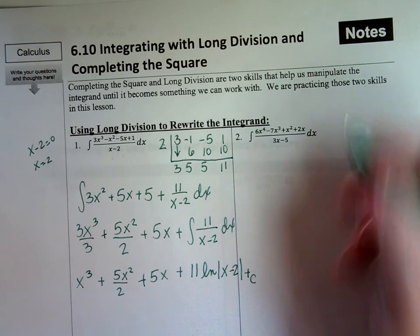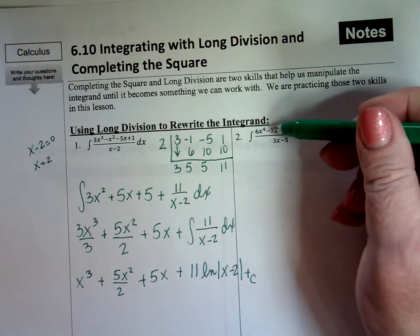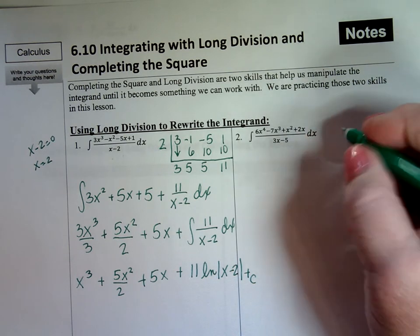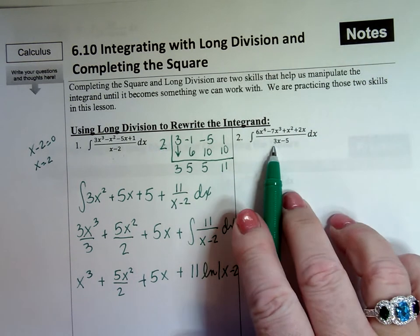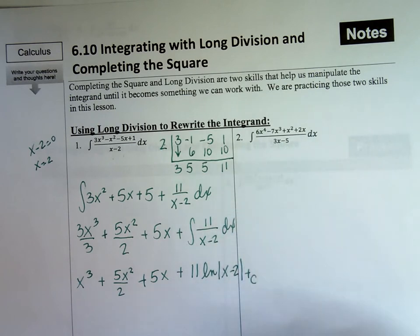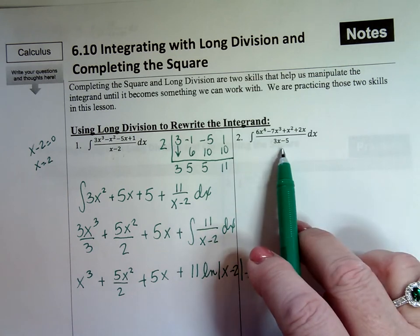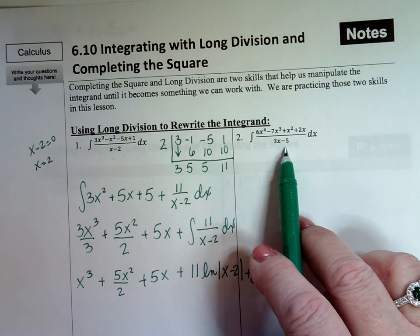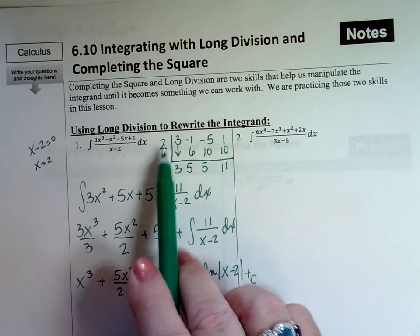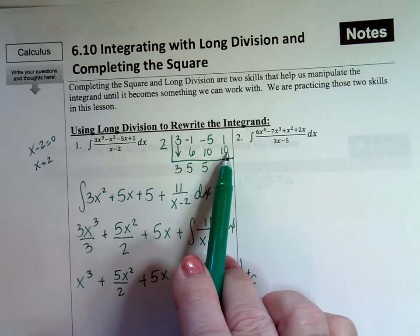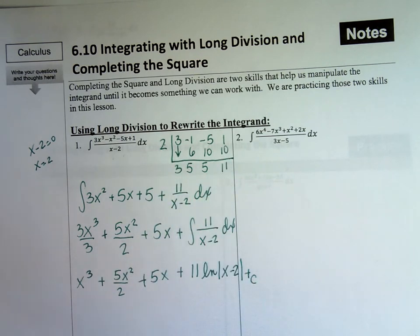Second problem. I have a fourth-degree numerator divided by 3x minus 5, so I need a zero placeholder for the constant term. This one's easier to do with long division, because if I set 3x minus 5 equal to zero I get 5/3 — that fraction out front can make synthetic division messy. So I would choose long division for this one.